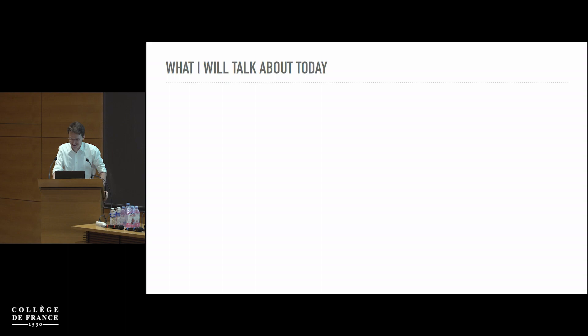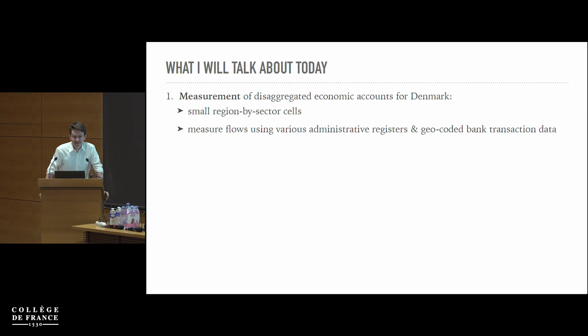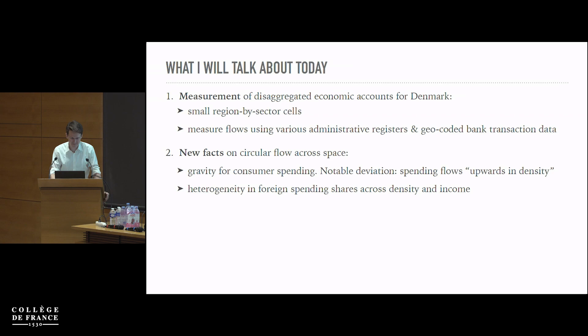What I'll talk about today is the measurement we've been doing on those disaggregated economic accounts for Denmark — which is why I need three Danish co-authors. We're doing this in small region-by-sector cells with about 1,700 adults per cell. We measure flows using various administrative data sources and geocoded bank transaction data, which turned out to be key and took us about a year and a half just to get working well.